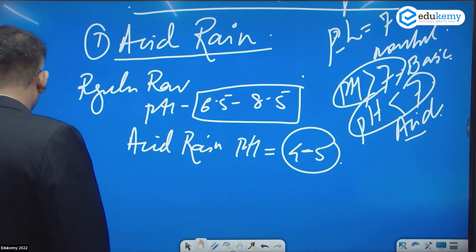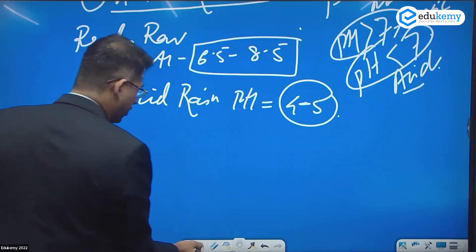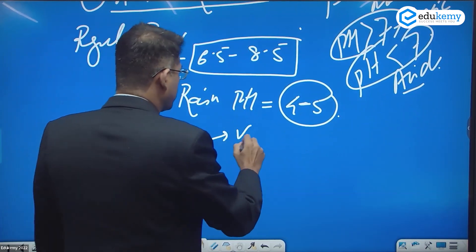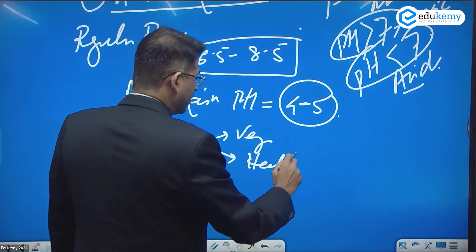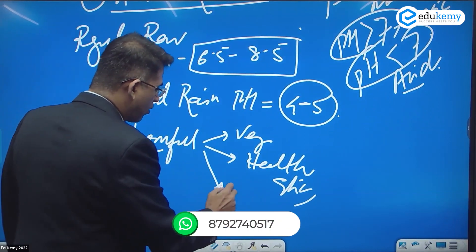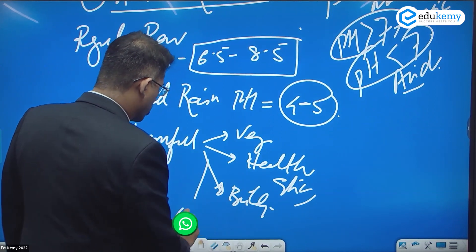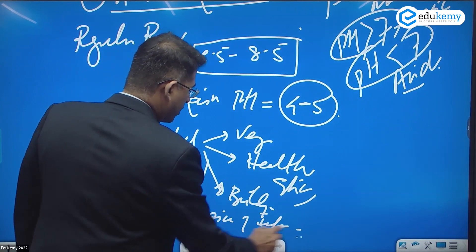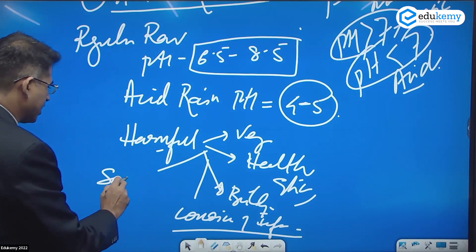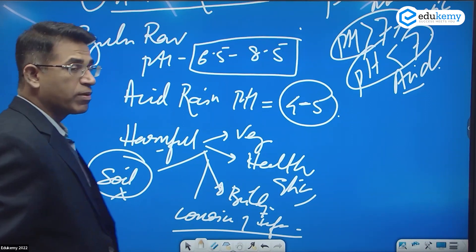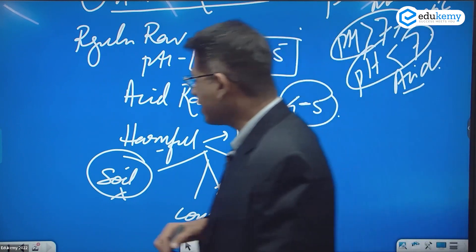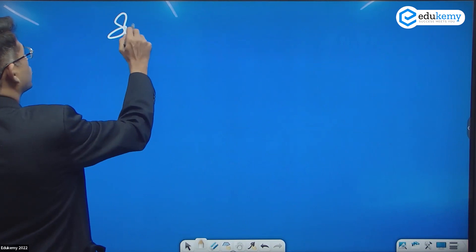Now, is acid rain harmful? Yes, this is harmful. It can impact vegetation, it can impact health — skin problems in particular, eye irritation, and more. It also impacts our buildings — it causes corrosion of infrastructure. The soil also gets degraded; acidic soils are always poor soils — it can cause problems of lack of fertility or reduced fertility.